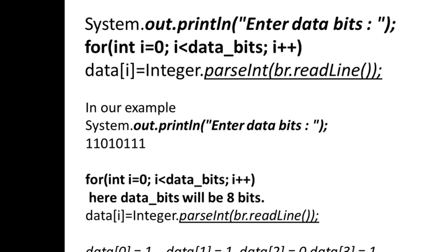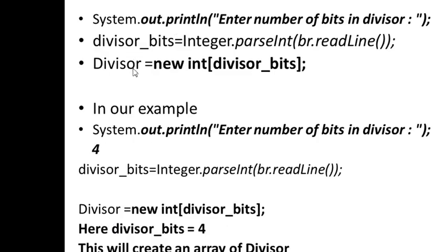The array indices run from 0 to 7: data[0]=1, data[1]=1, data[2]=0, data[3]=1, data[4]=0, data[5]=1, data[6]=1, data[7]=1. Next, the program prompts the user to enter the number of bits in the divisor, which represents the polynomial. That value is read and stored into 'divisor_bits'.